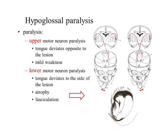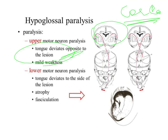You have an upper motor neuron paralysis and a lower motor neuron paralysis. The upper motor neuron paralysis is when the paralysis occurs in the area of the cerebral cortex. When you have this paralysis, the entire deviation is going to be to the opposite side of the paralysis. So, if you have a lesion of the right side, the tongue is going to move to the left side. On the other hand, when you have a lower motor neuron paralysis, the tongue deviates to the side of the lesion — it is going to move to the side of the paralysis.